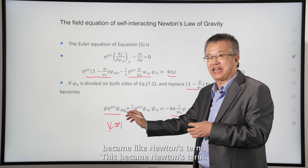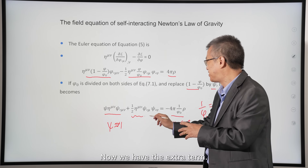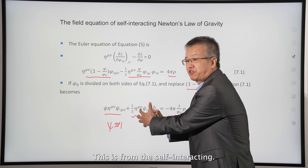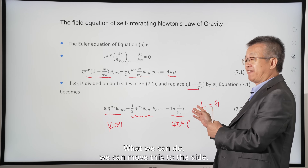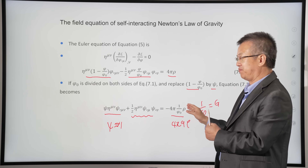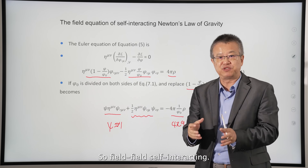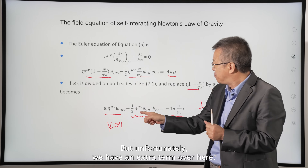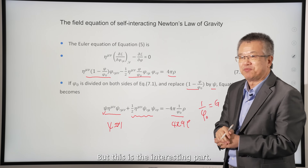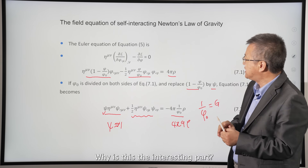If we make Phi approximately equal to one, this term becomes Newton's term. We have an extra term from the self-interaction. We can move this to the source side, meaning the field and matter both act as sources. The field is self-interacting, but there is an extra term — and this is the interesting part.